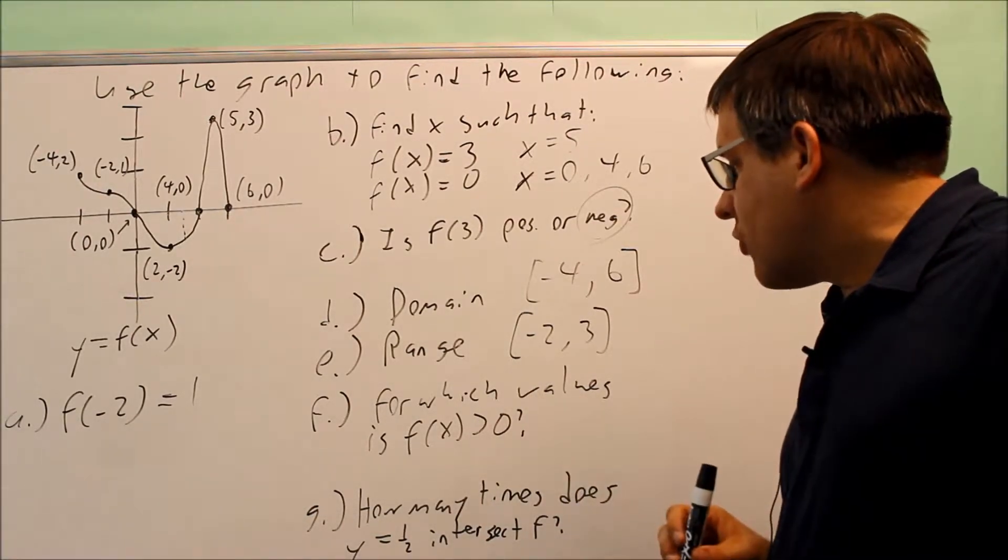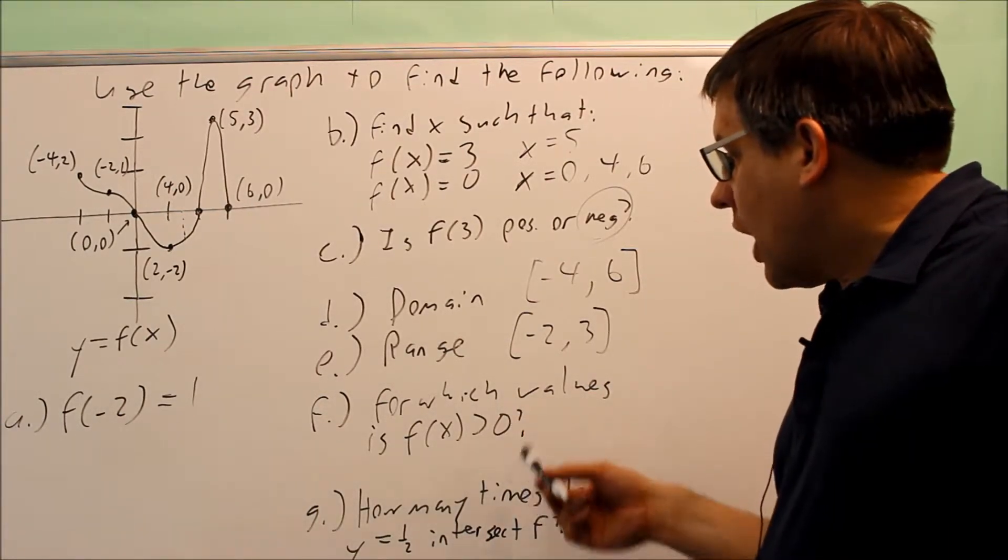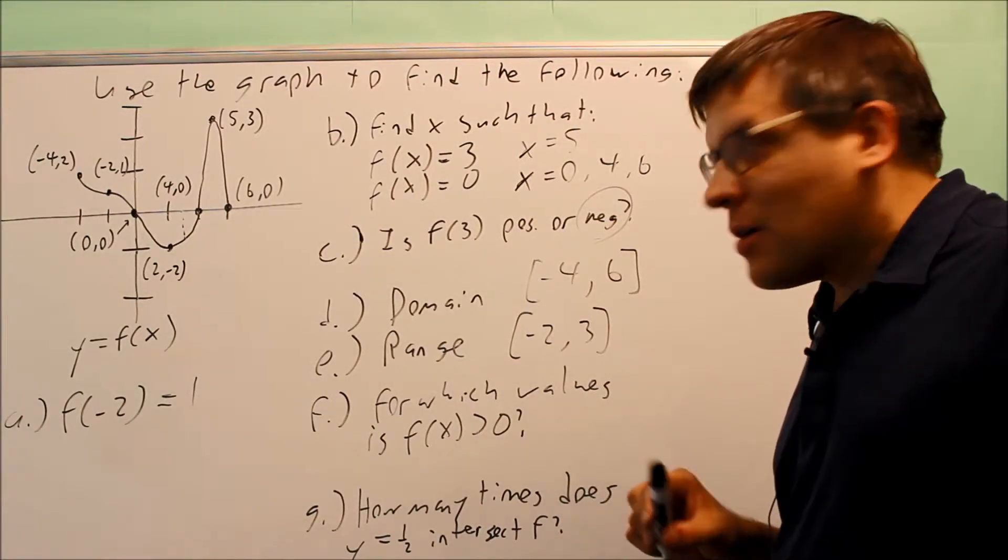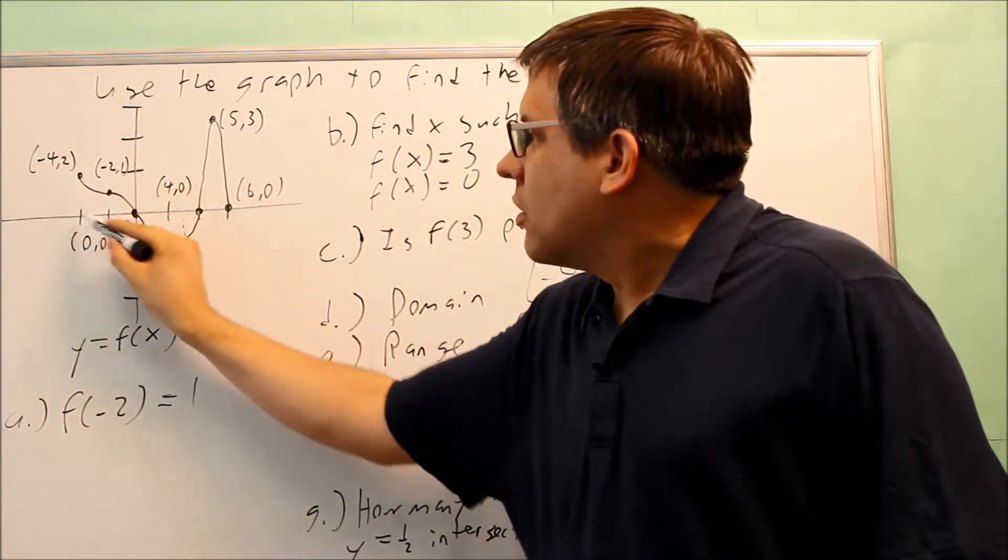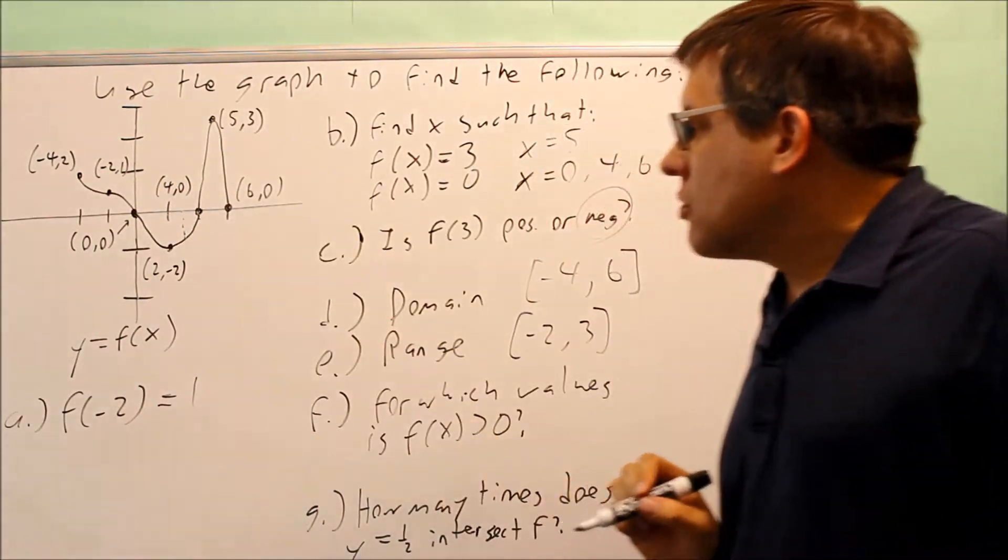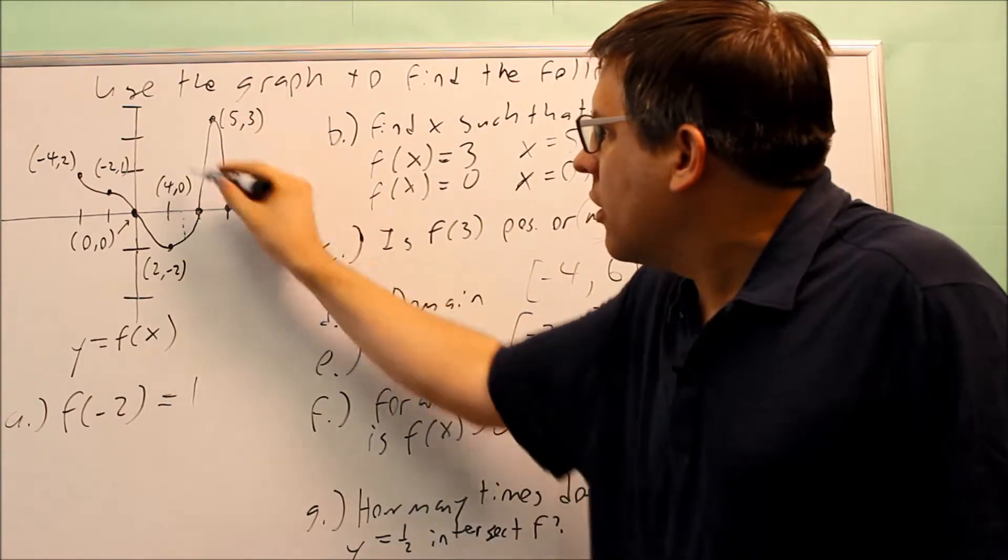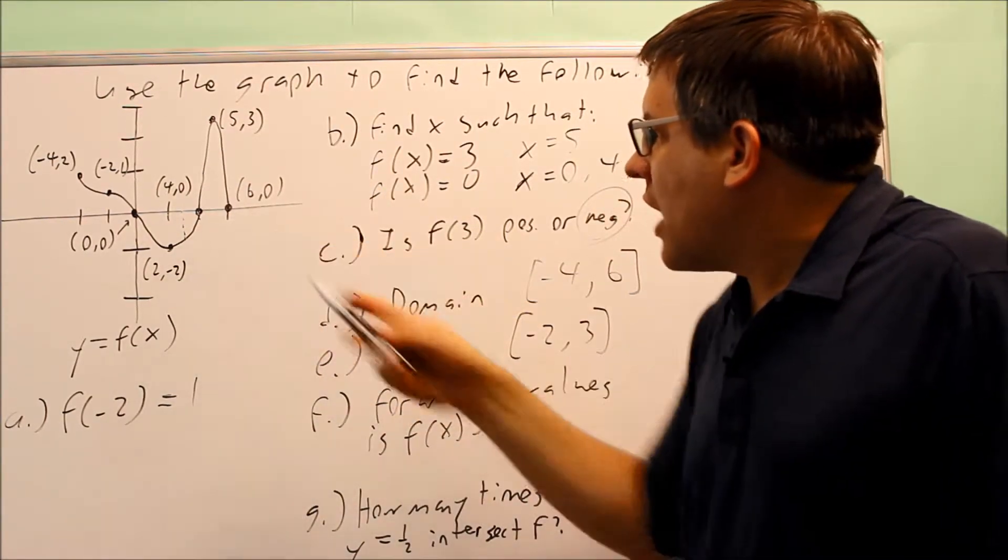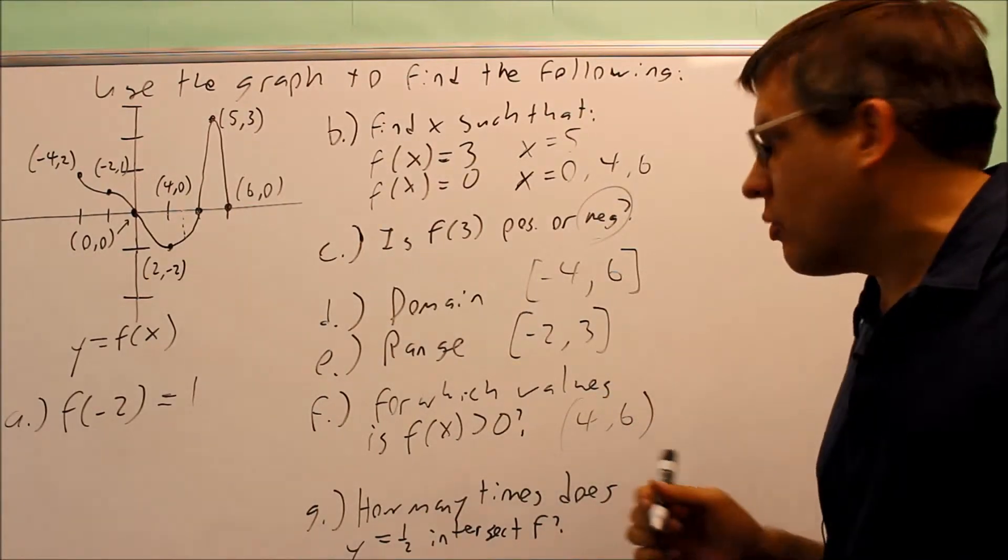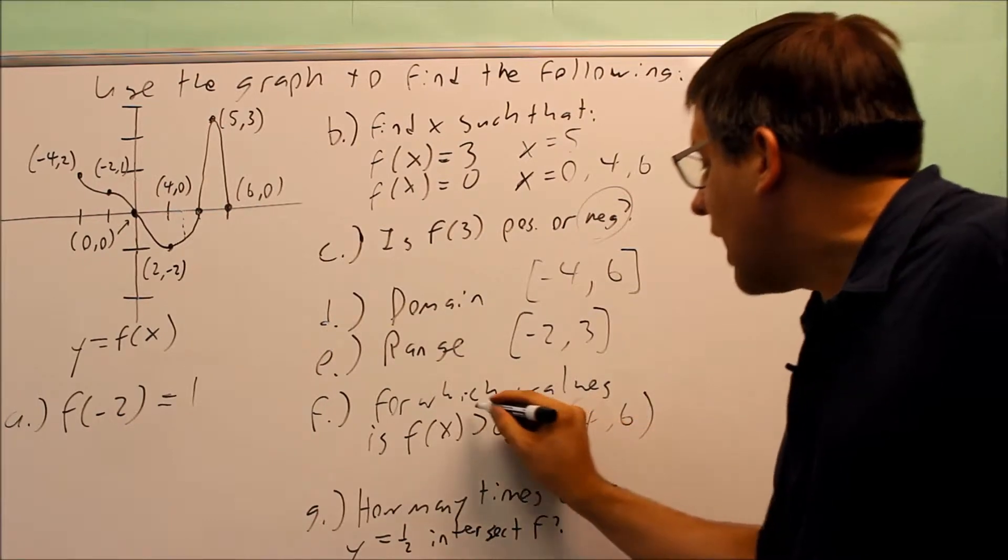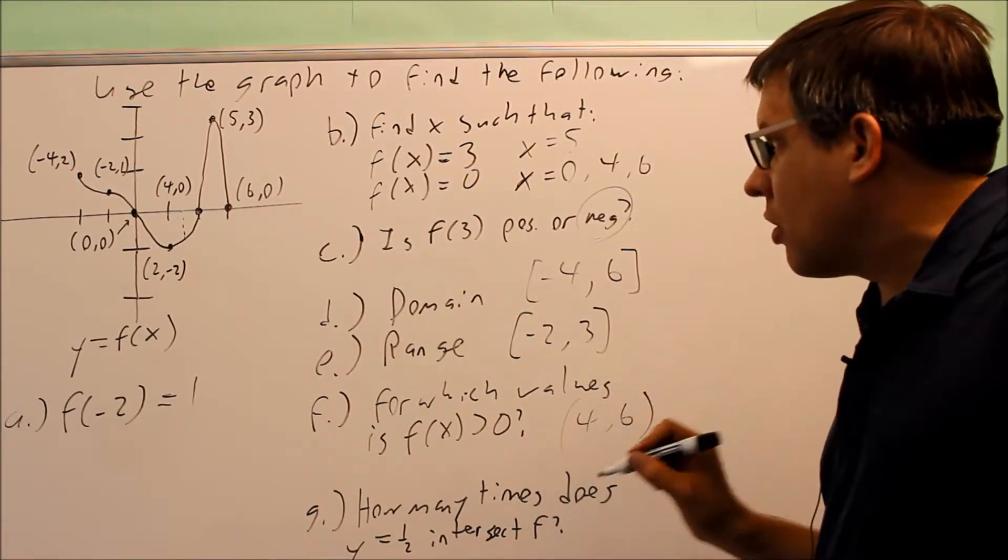Now it asks for which values is f(x) > 0. It's saying what part of the graph is above the x-axis. Positive y values are above the x-axis. I have this section of the graph right here, and I have this section of the graph that's being used. So I want to indicate the x values for which that's occurring. There's a section of the graph that's above the x-axis between 4 and 6. The reason I'm putting parentheses is because I have a greater than but not equal to symbol. Greater than means I'm not able to include 0.